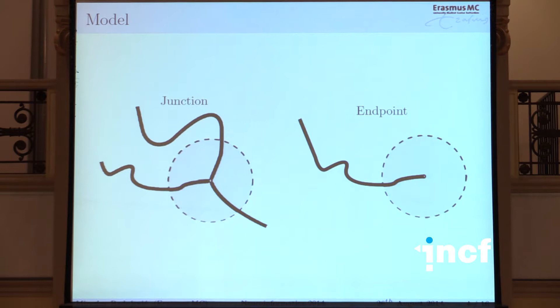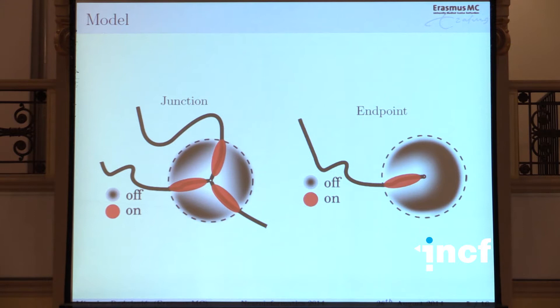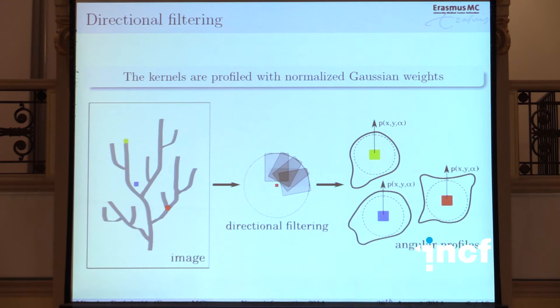I'm going to talk about the methodology to make a computer program that automatically detects these points. For each location, we take the neighborhood and see what happens with the pixel intensities within this region, and we look for patterns. For bifurcations we look for three streamlines spreading out from the center of the region; for endpoints we look for one streamline. It's also equally important to detect that there's nothing in the remainder of the region.